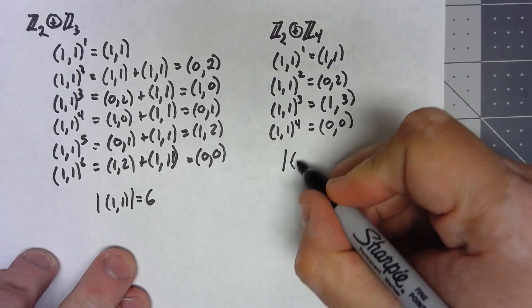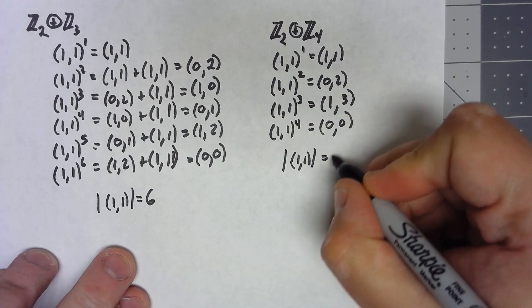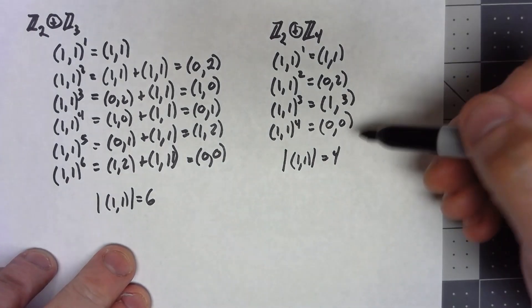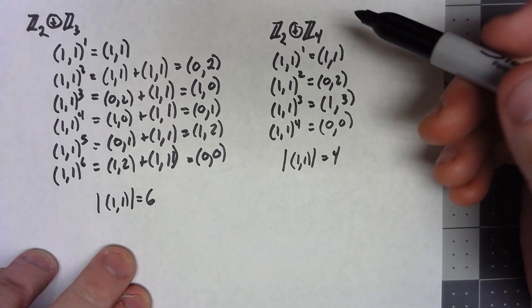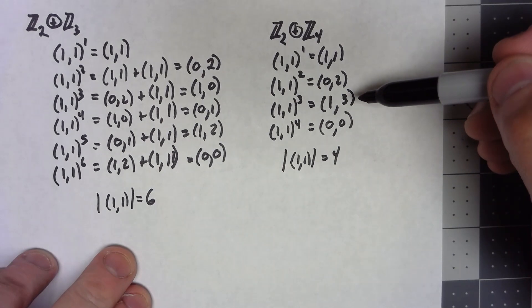So in this one the order of (1,1) is equal to 4, and there are several things in there that were not generated by this.